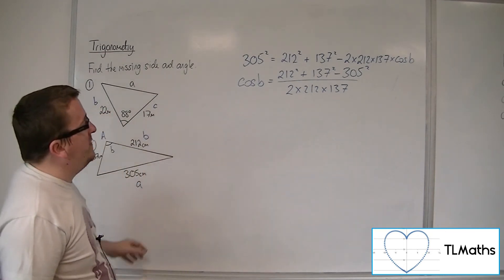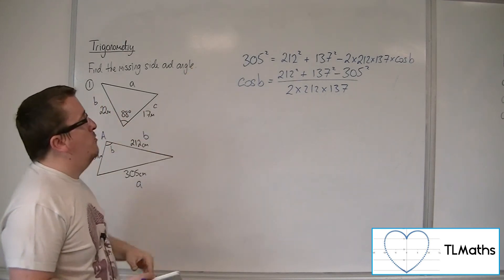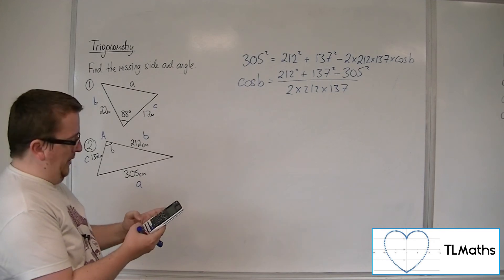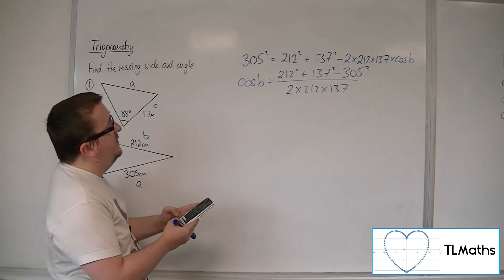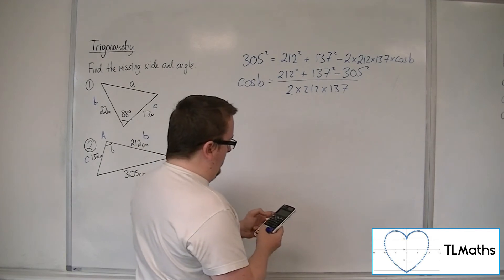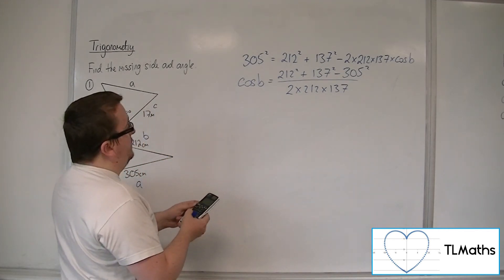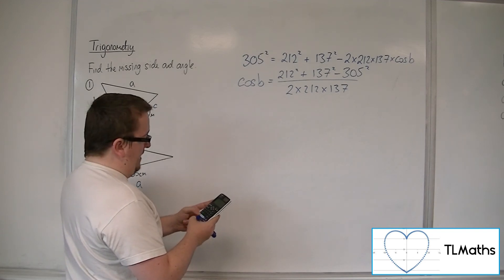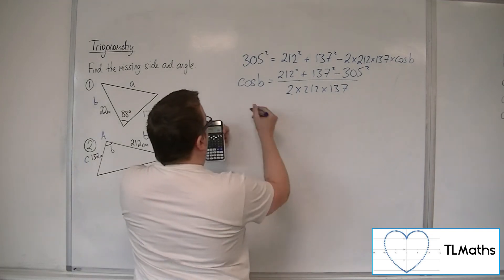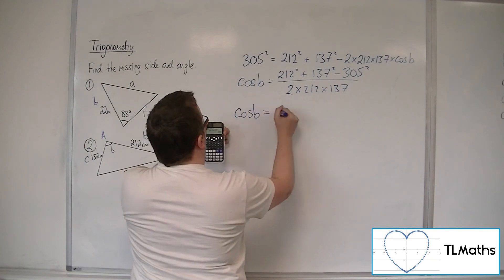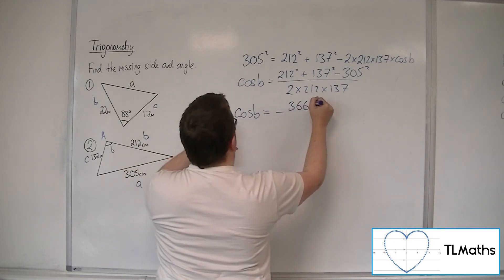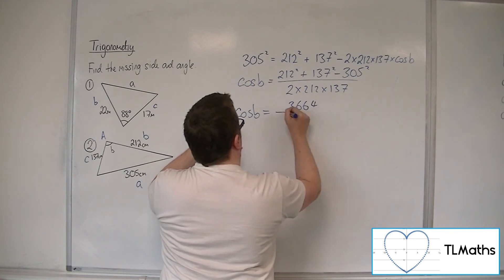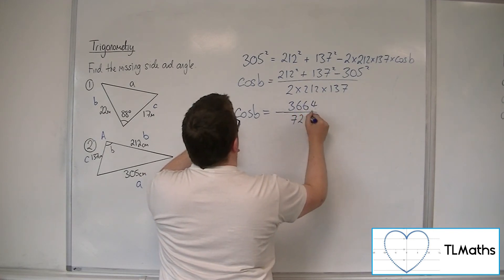In the majority of cases, I expect people will remember that first form. So 212 squared plus 137 squared, take away 305 squared, and then divide that by 2 times 212 times 137.